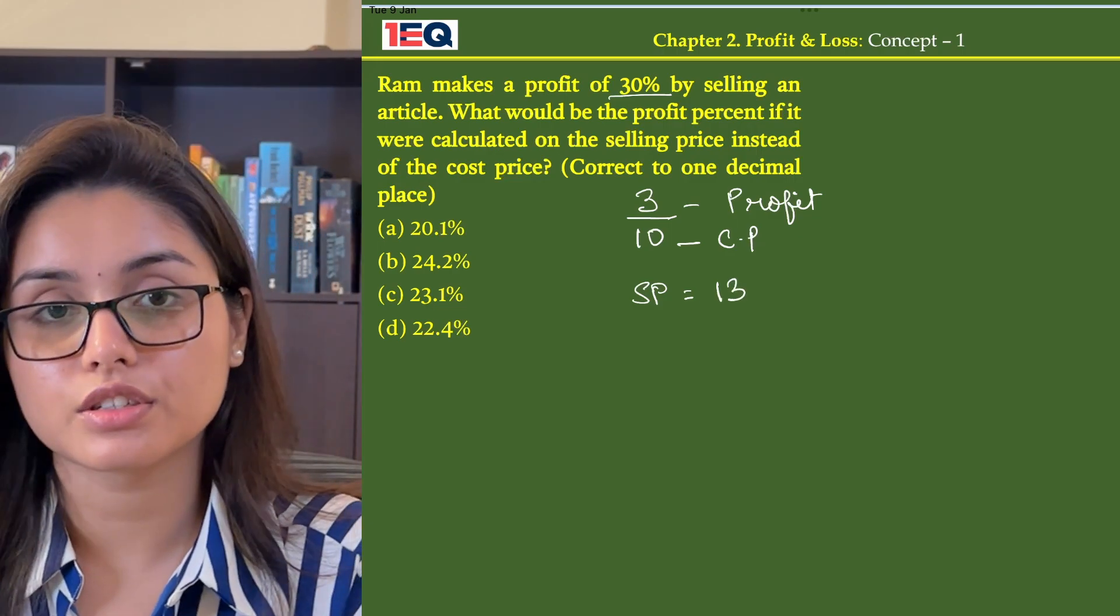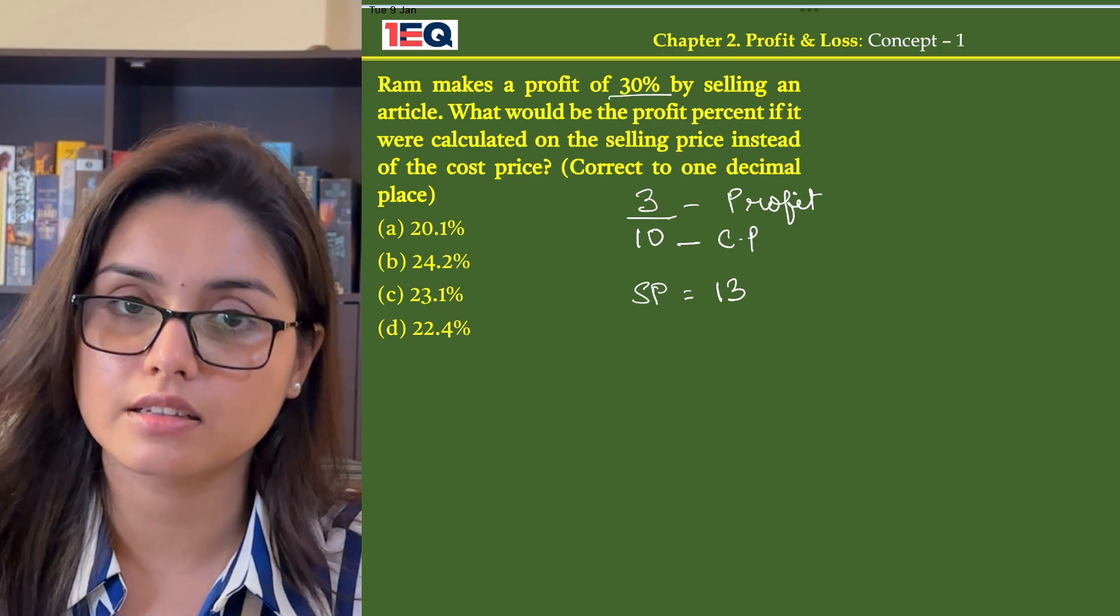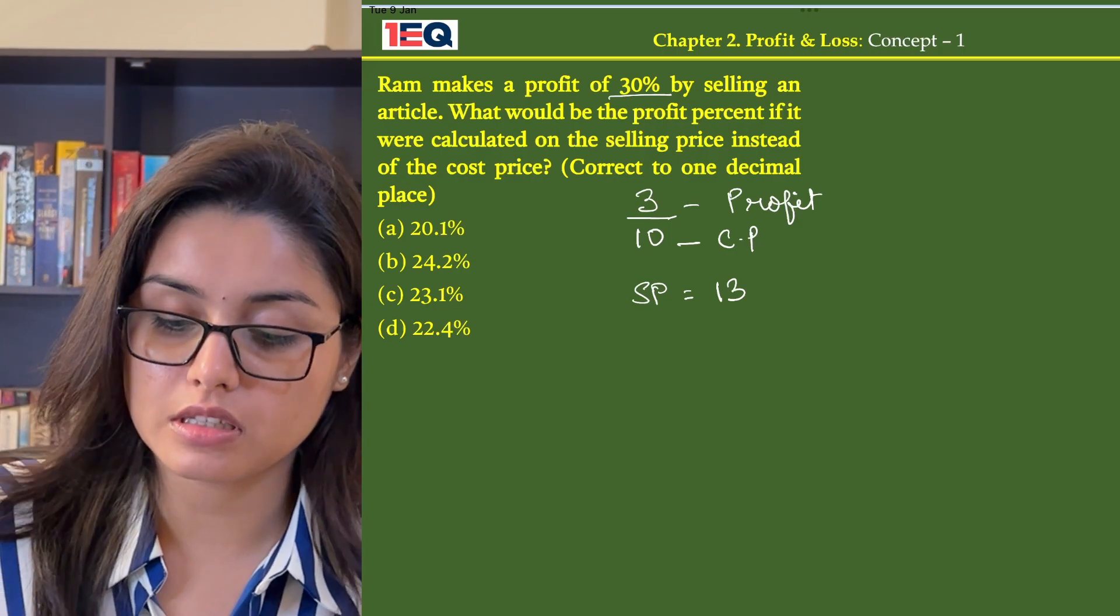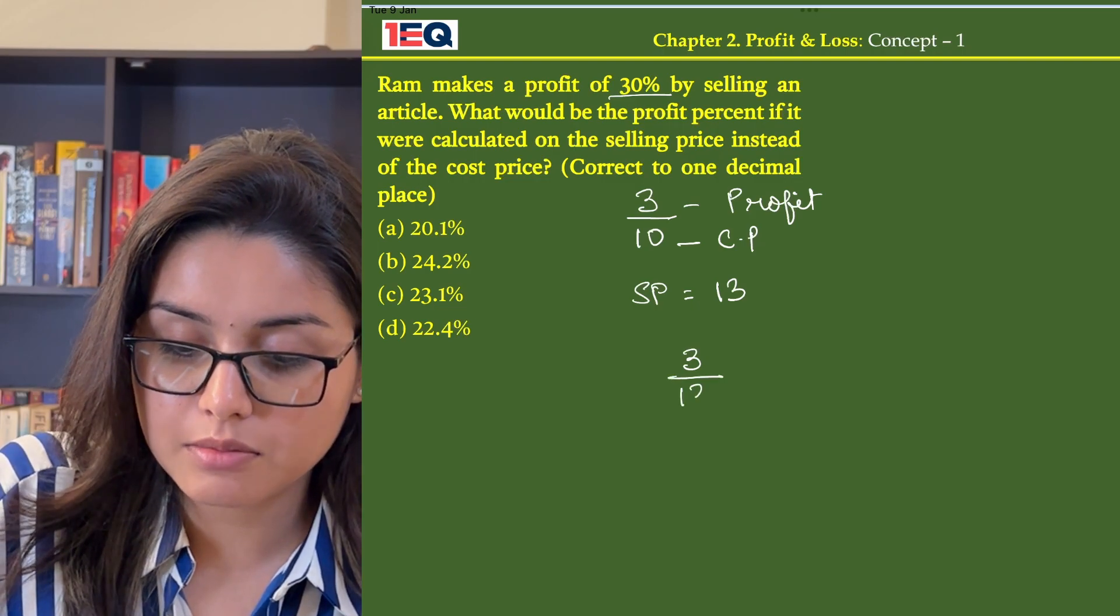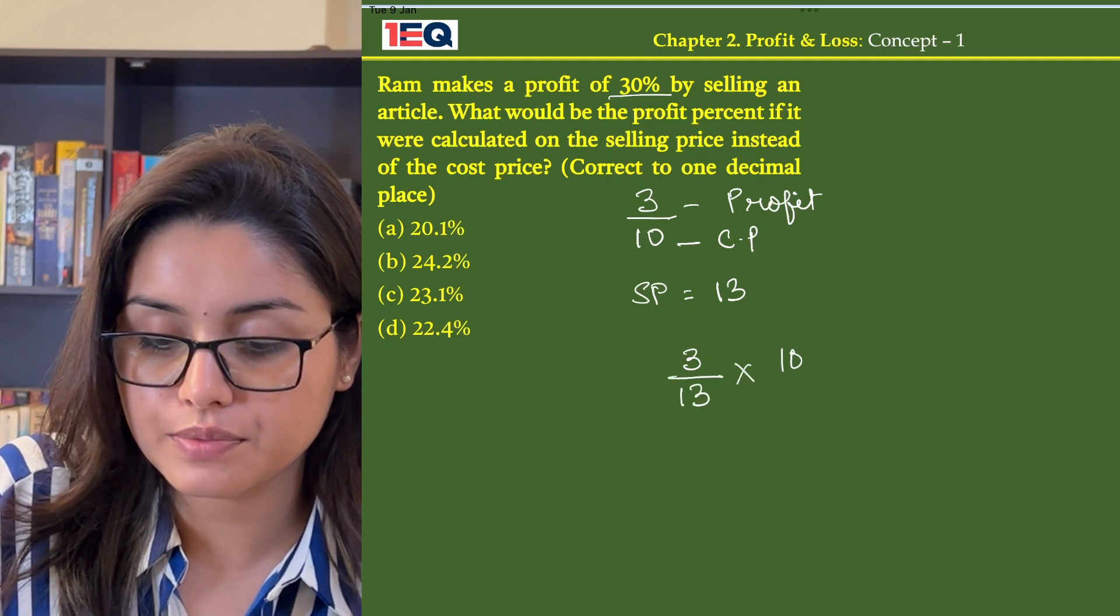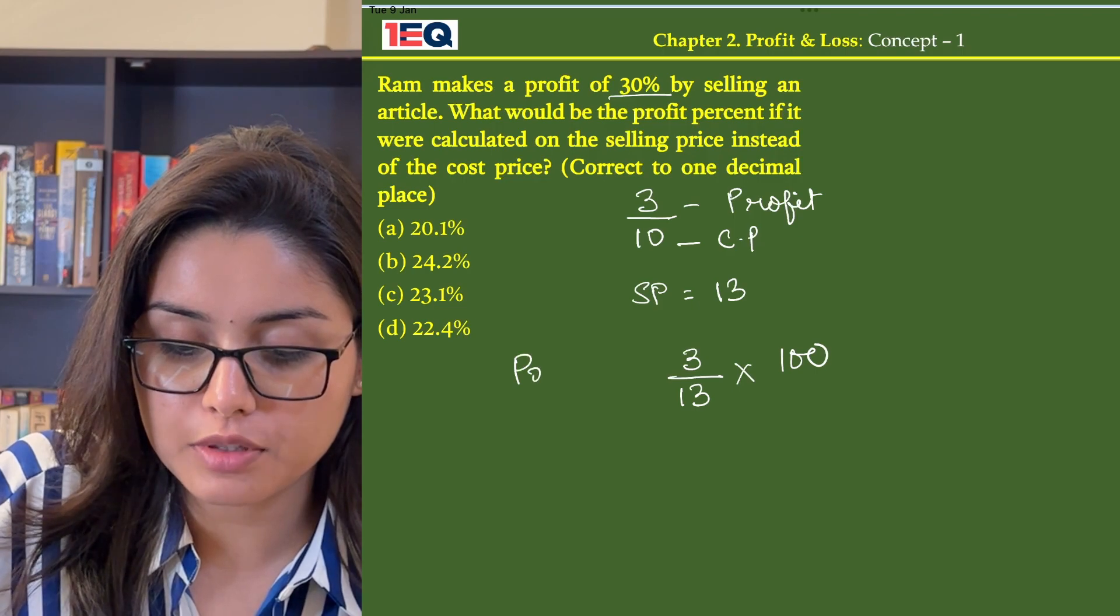Now in the question they have asked to find the profit percentage on the selling price. So my profit percentage will be my profit by my selling price into 100. This is my profit percentage.